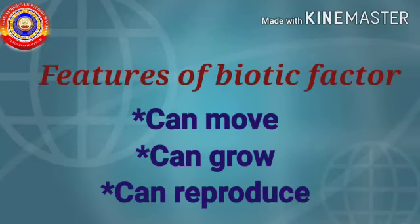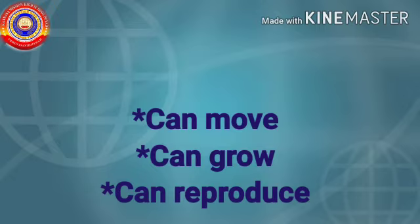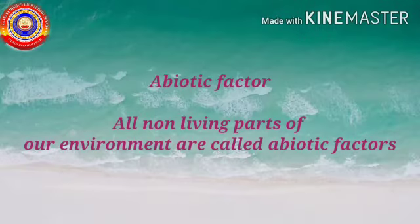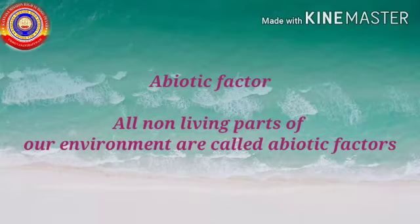The features of biotic factors: they can move, they can grow, and they can reproduce. Reproduce means they can give birth to their young ones. Next is abiotic factor — what is an abiotic factor? All non-living parts of our environment are called abiotic factors.